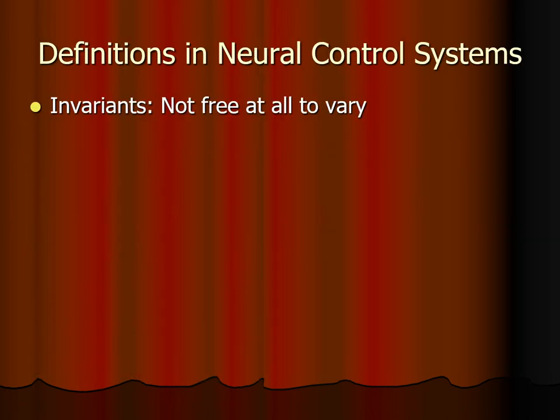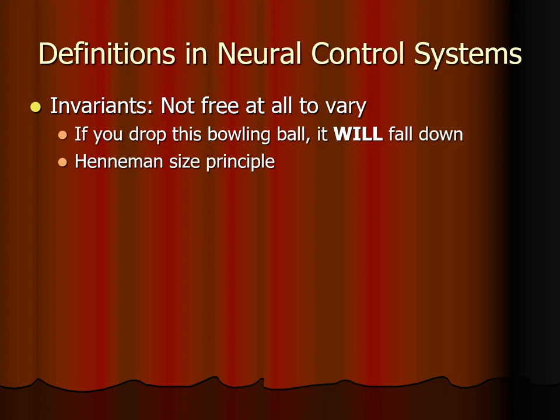There are three kinds of factors in terms of neuromotor control. First are the invariants — so called because they are not free to vary at all. For example, if I drop a bowling ball here on Earth, it will fall to the floor; it will never fall to the ceiling. Another invariant we'll talk about in the next unit is the Henneman size principle, which describes how the motor units associated with the smallest alpha motor neurons will recruit first. Always happens that way — always.